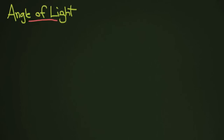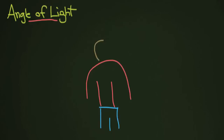Now let's take an example here. We're going to draw a person — this is going to be a very poorly drawn person. So here we've got our person, and they've got a head right here. Now there's lots of different ways to light this person.